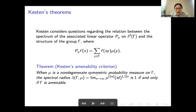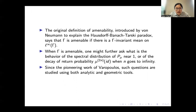The notion of amenability has more than a dozen equivalent characterizations; it was introduced by von Neumann. We can take the definition to be that gamma is amenable if there is a gamma-invariant mean on L-infinity functions on gamma. Kesten's theorem tells you amenability — a property of the group gamma — is equivalent to sub-exponential decay of the return probability to identity. Quantitatively, one can further ask what is the behavior of the spectral distribution of P_mu near 1, or equivalently, what is the decay of the return probability when n goes to infinity. These questions have been studied extensively since the pioneering work of Varopoulos, and both analytic and geometric tools have been developed.